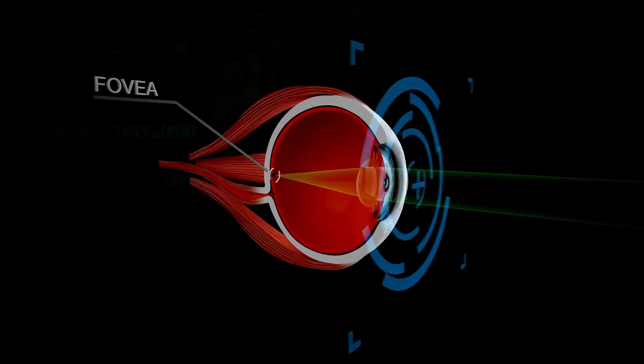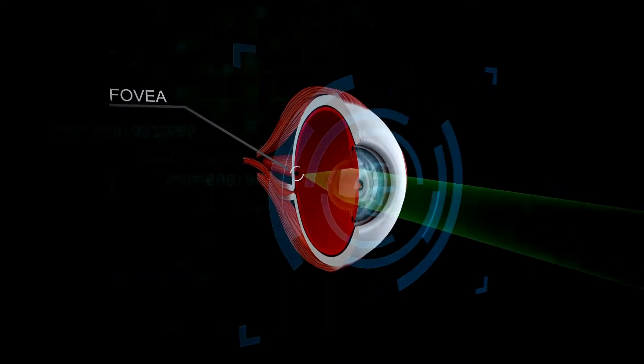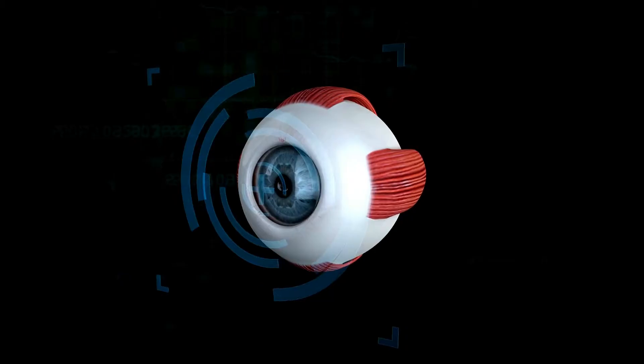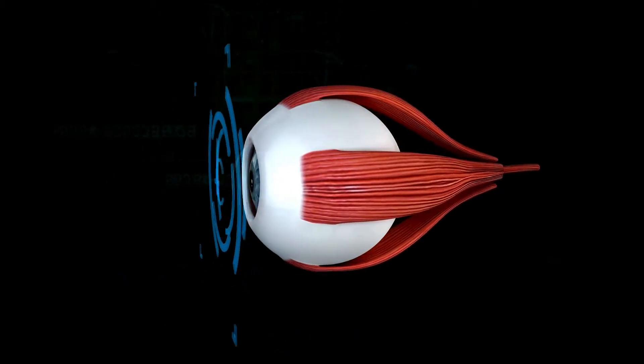For the eye to function, every component must be present and working perfectly. What good is a partially formed eye? An eye without a cornea would be useless. An eye without a lens couldn't focus.